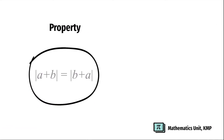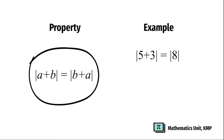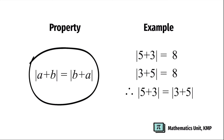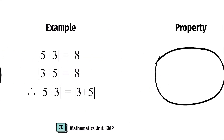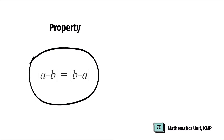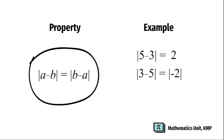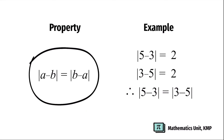The third property: absolute value of A plus B equals absolute value of B plus A. For example, absolute value of 5 plus 3 equals absolute value of 8, which is 8. Similarly, absolute value of 3 plus 5 is also 8. Therefore, absolute value of 5 plus 3 equals absolute value of 3 plus 5. Likewise, absolute value of A minus B equals absolute value of B minus A. Absolute value of 5 minus 3 equals absolute value of 2, which is 2. Absolute value of 3 minus 5 equals absolute value of negative 2, which is also 2.